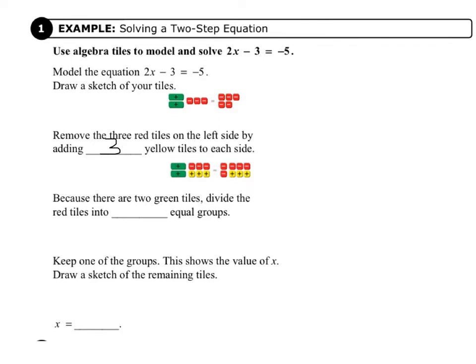Now we're going to remove the three zero pairs from each side, so those just go away. And then because there are two green tiles, we divide the red tiles into two equal groups. I'll show you what that looks like, and then you copy that into your record and practice journal.